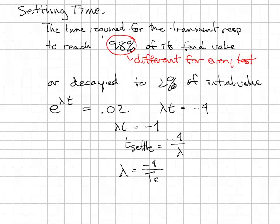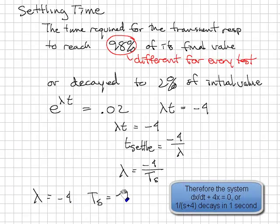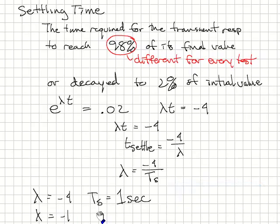Just some useful numbers here. If lambda is equal to minus 4, t settling is 1 second. If lambda is equal to minus 1, t settling is 4 seconds.